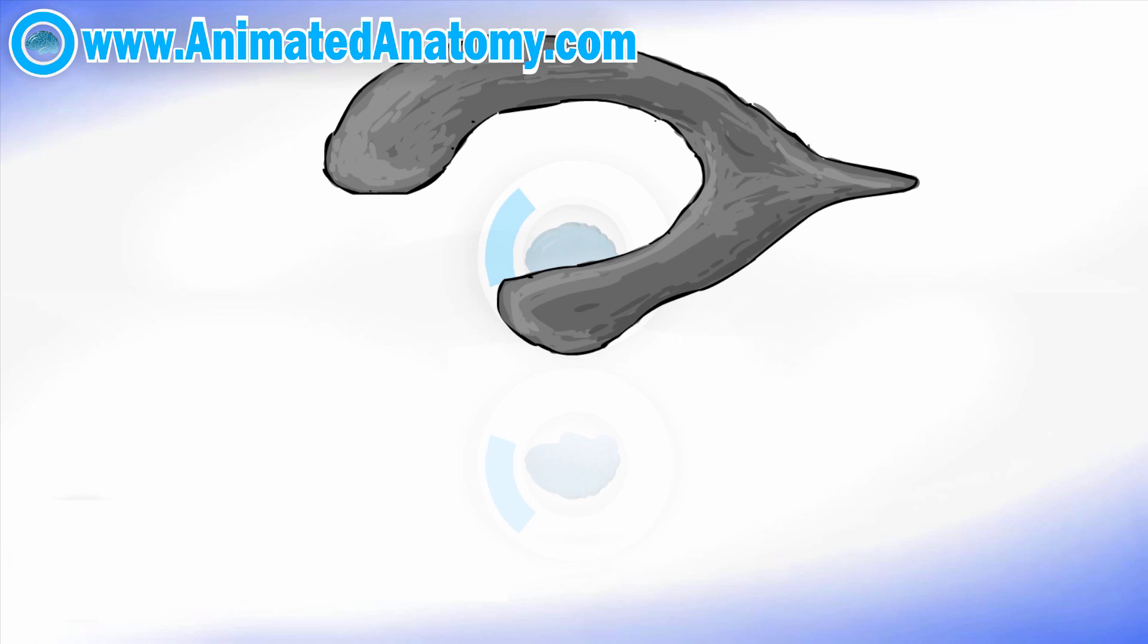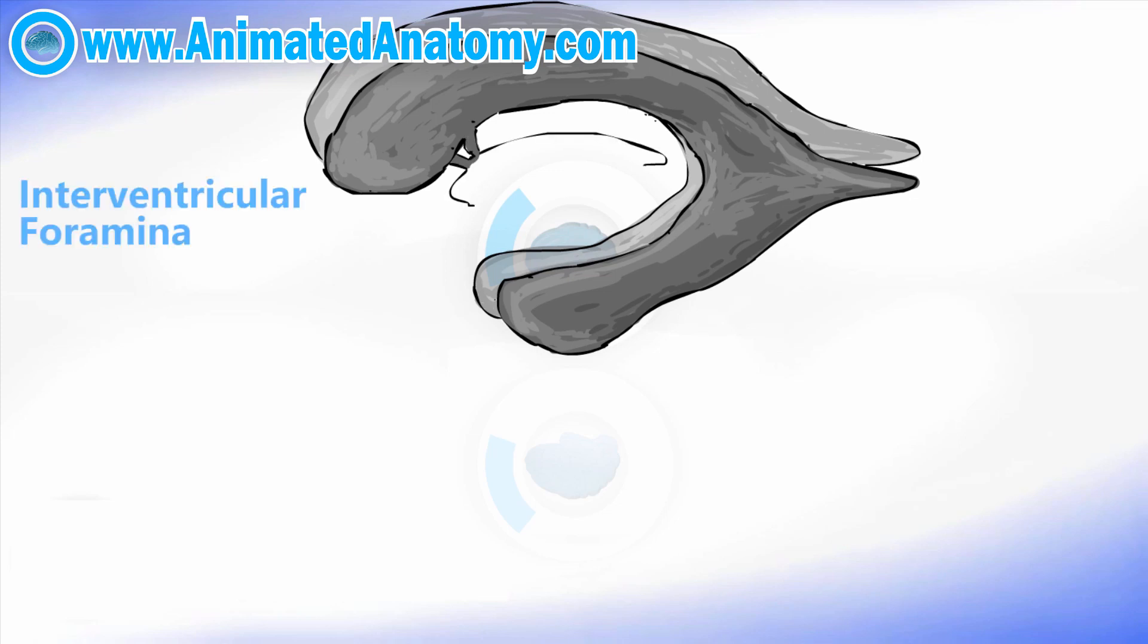So we have the left and the right lateral ventricle and then there are the interventricular foramina right here and they connect the lateral ventricles with the third ventricle. So here is the connection between the lateral ventricles and the third ventricle.